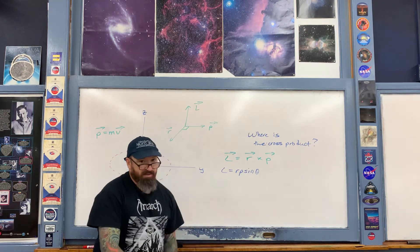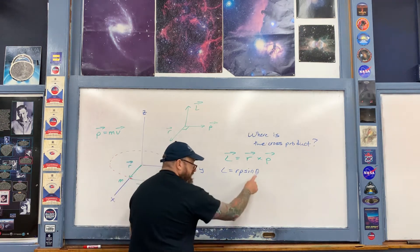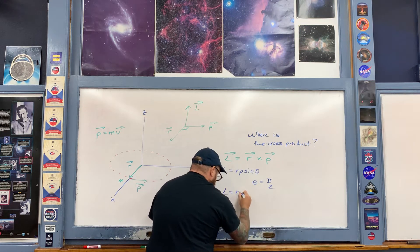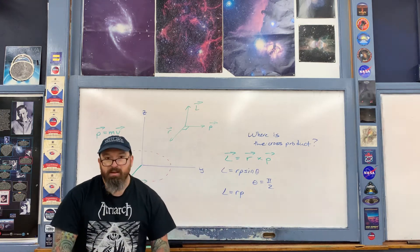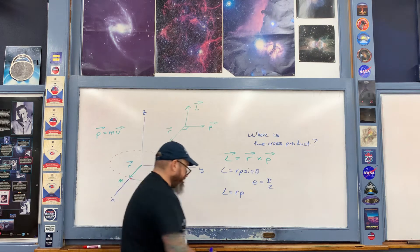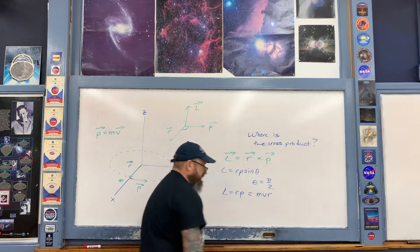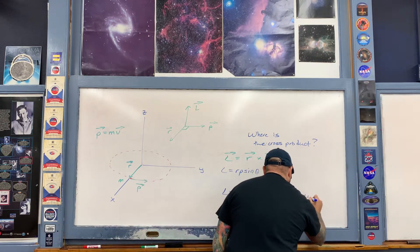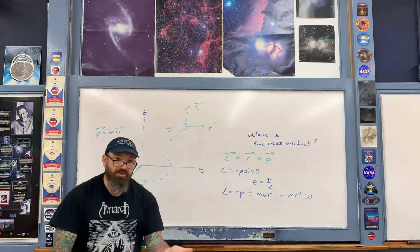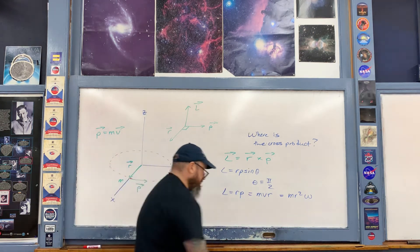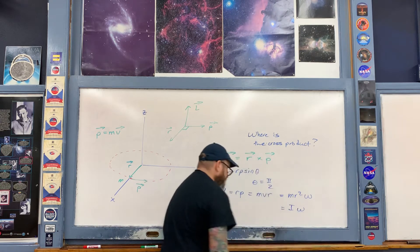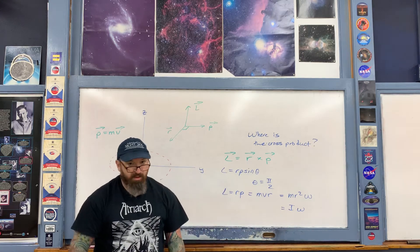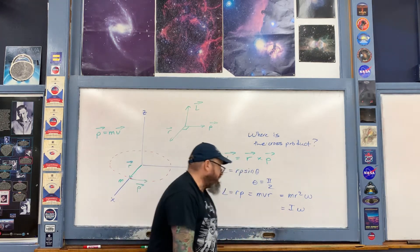How is this equal to I omega? Setting theta equal to 90 degrees for simplicity, L equals r times p. For a point particle, p is just mv, so we have mvr. And v equals r times omega, giving us mr squared times omega. That mr squared is the rotational inertia I of a point particle. The direction of the L vector is the same as the direction of the omega vector. That's how we arrive at L equals I omega for a point particle.